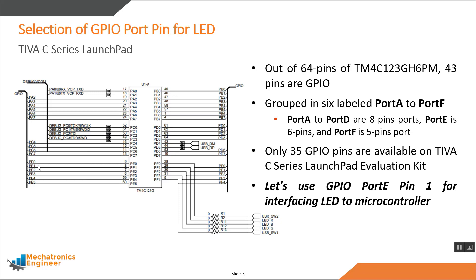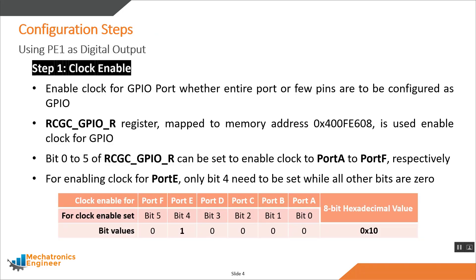We can use any available GPIO pin. Let's use port E pin 1 for interfacing the LED. After selecting port E pin 1 as digital output for the LED, we need to perform some configuration steps. Step one is to enable the clock for the GPIO port. By default, the clock on all GPIO ports is disabled in order to save power, so whether we use the entire port or just a few pins, we need to enable the clock for that port. The clock gating control register is responsible for enabling the clock for GPIO ports.